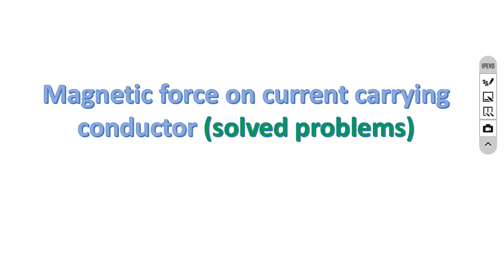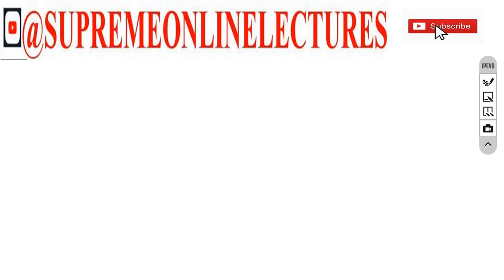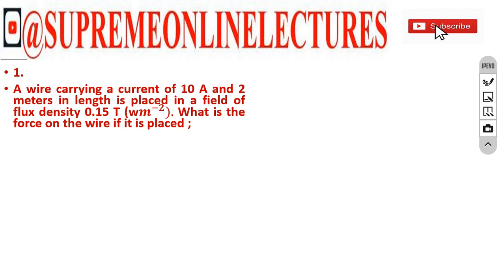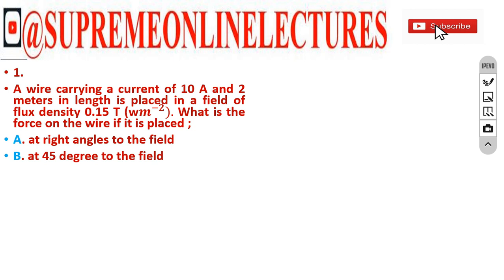In this lecture, we are going to be looking at magnetic force on current-carrying conductors. Let's consider the first example. A wire carrying a current of 10 Ampere and 2 meters in length is placed in a field of flux density 0.15 Tesla. What is the force on the wire if it is placed at right angles to the field, at 45 degrees to the field, and along the field?